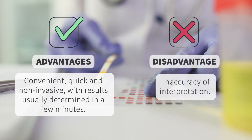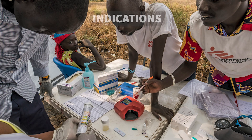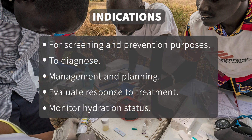The main advantages of using a urine dipstick are that it is convenient, quick, and non-invasive with results usually determined in a few minutes. The main disadvantage is inaccuracy of interpretation. The indications for urinalysis using dipstick are: 1, for screening and prevention during routine health assessments; 2, for diagnosis of suspected conditions such as infections or systemic diseases such as diabetes mellitus,